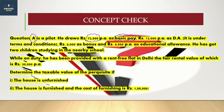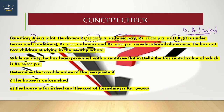DA is 12,000 — that is the Dearness Allowance under the terms and conditions of employment. Bonus is 6,000. And we have the Education Allowance: 6,000 per annum.